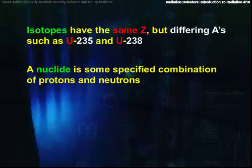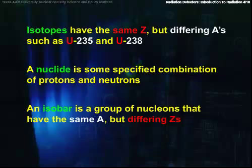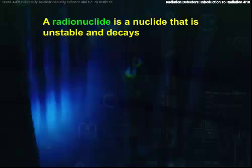A nuclide is some specified combination of protons and neutrons. An isobar is a group of nucleons that have the same mass number, but differing atomic numbers. A radionuclide is a nuclide that is unstable and decays.